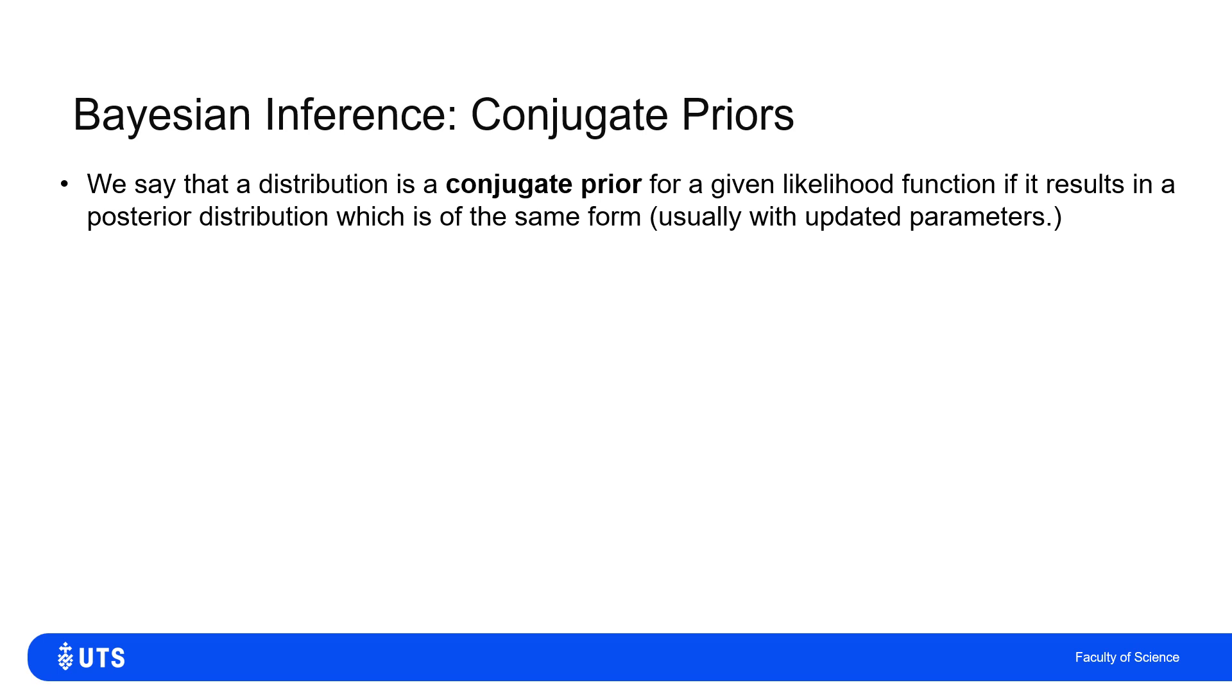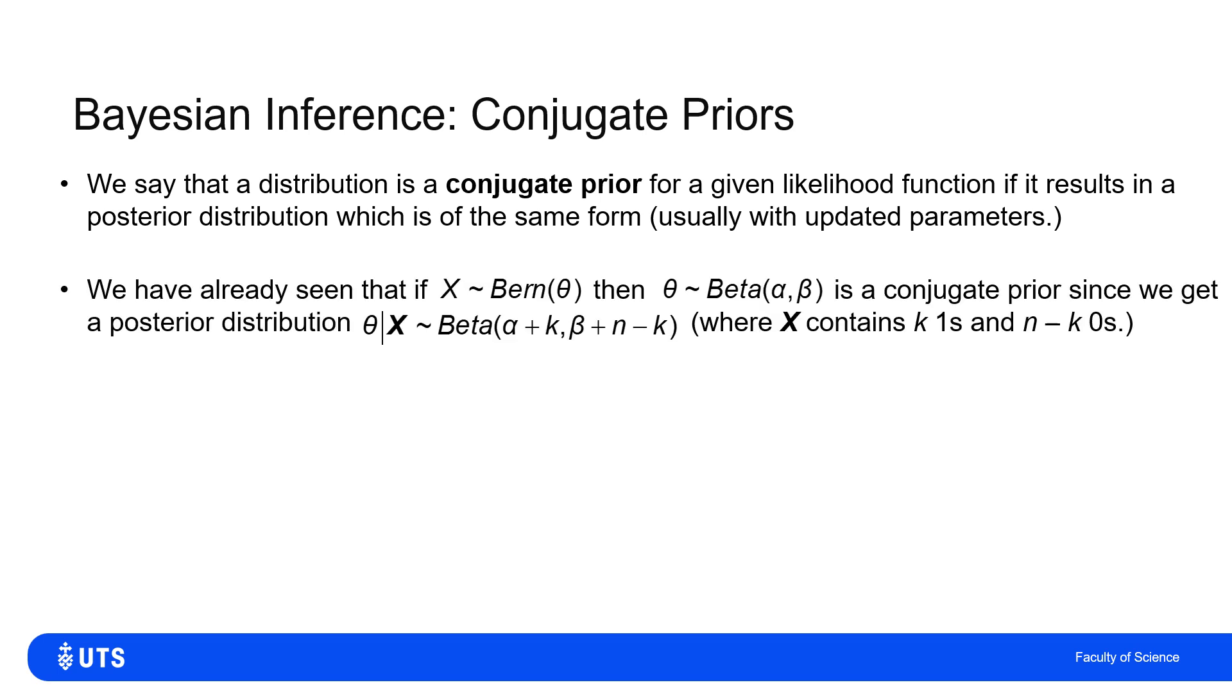This defines what we call the conjugate prior. The conjugate prior is just one that, for a given likelihood function—for a given type of experiment—the posterior distribution will be the same type of distribution, although usually with updated parameters. Like in this case, I started with a beta distribution as my prior, I had a whole load of Bernoulli trials, and I ended with a beta distribution describing my posterior beliefs. So a beta with a beta means that the original prior was in fact a conjugate prior.